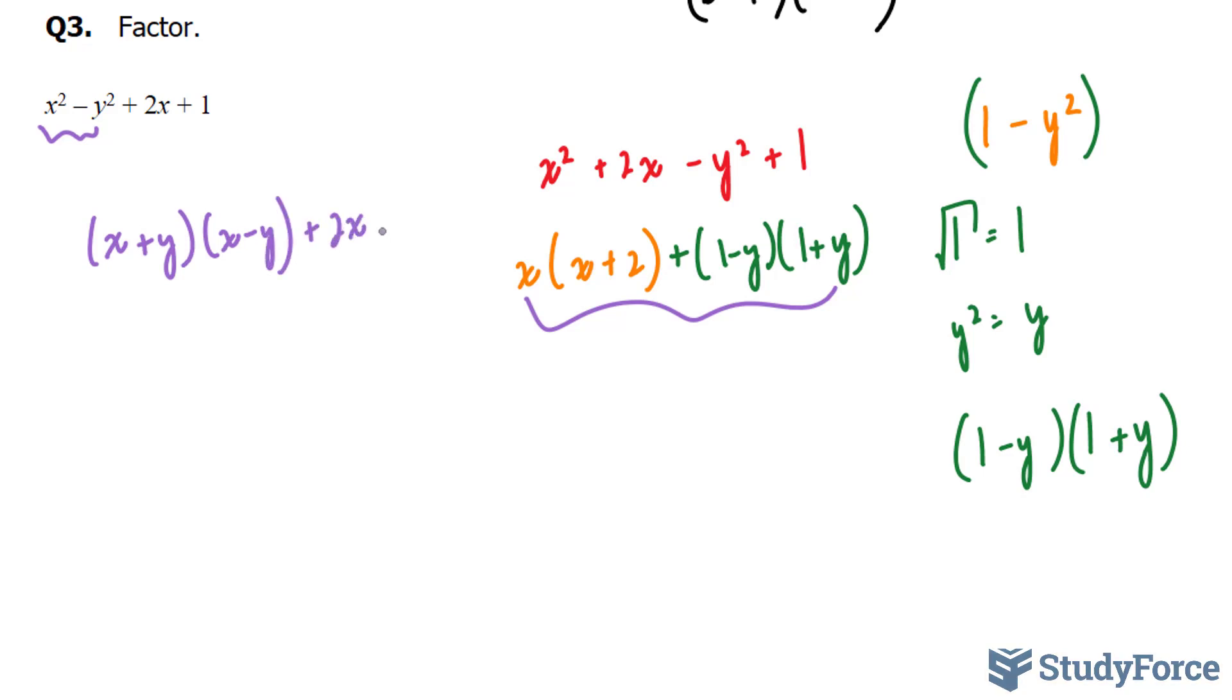plus 2x, plus 1. That is another option. And a third option could have been to group this, this, and this together, which would give us a quadratic trinomial. And here's what I mean.